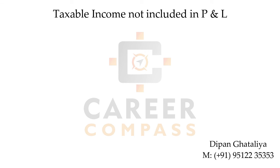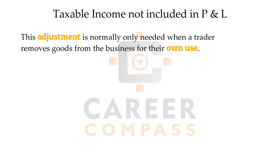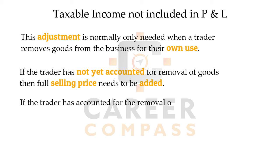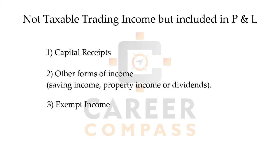Next, we need to adjust for taxable income not included in the P&L that actually should be added. This adjustment is generally required when the owner takes goods from the business for personal use — the business should recognize that income under trading income. If the transaction was not recorded at all, it must be recorded at selling price. If it was already recorded at cost, only the profit element needs to be added.